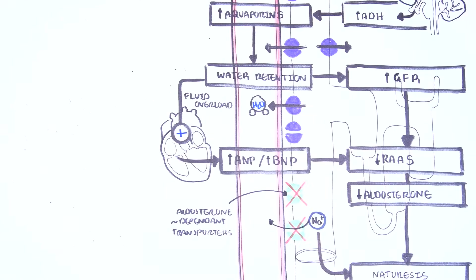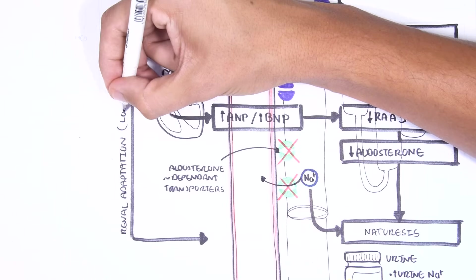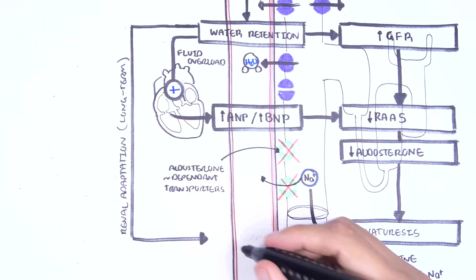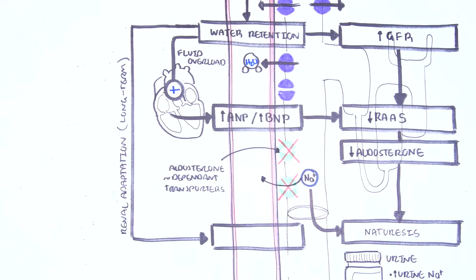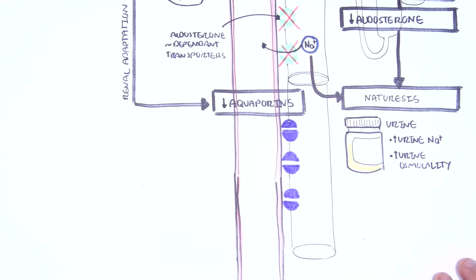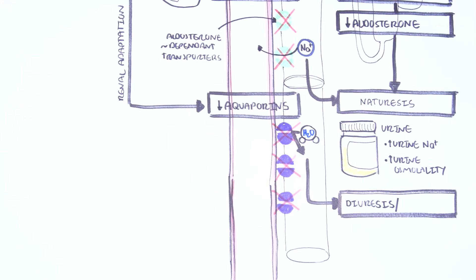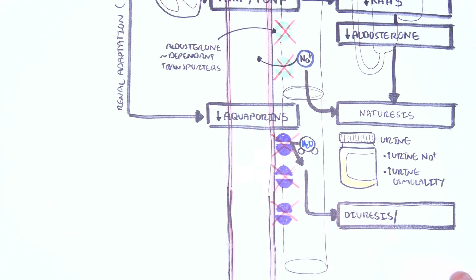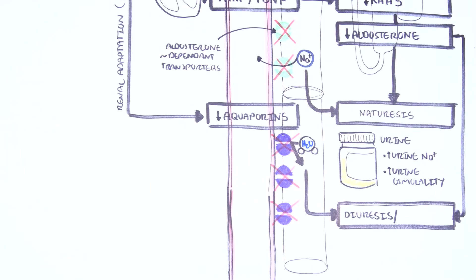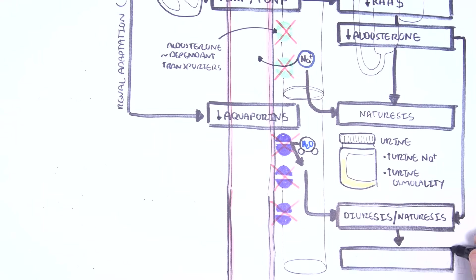The important thing to remember about SIADH is that over time, long-term, there is renal adaptation in the kidneys that will reduce the number of aquaporins by itself to reduce water retention. As a result, you will excrete more water — diuresis — together with the existing natriuresis from the reduced aldosterone levels. Because of this mechanism, you get a euvolemic picture — euvolemic hyponatremia.